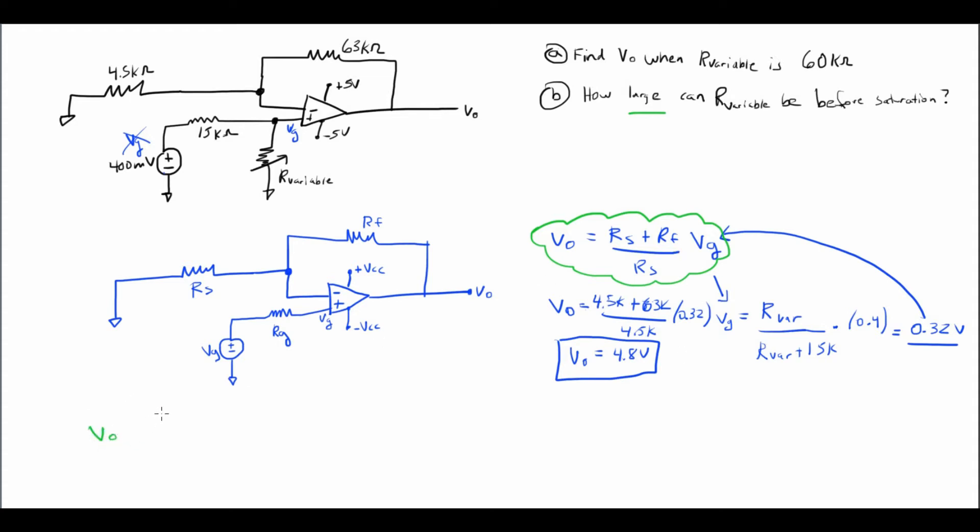So the first thing I'm going to do here is I'm just going to go ahead and just write out everything I know so far. So VO is equal to RS plus the feedback resistor over RS times my voltage division. So because VG is going to be RVAR over RVAR plus 15K times 0.4. I can go ahead and represent it like so.